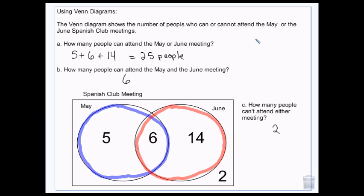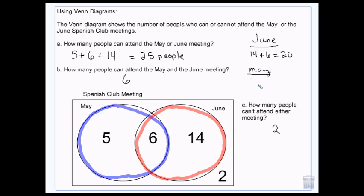If I just asked June, I've got everybody in the red — so 14 plus 6. And if I just say May, it's 5 plus 6.